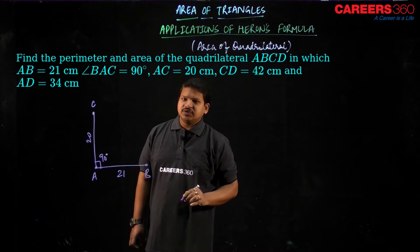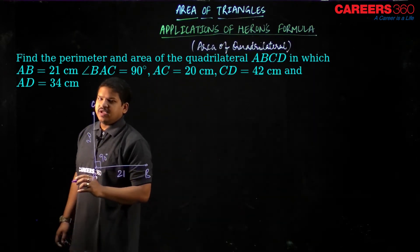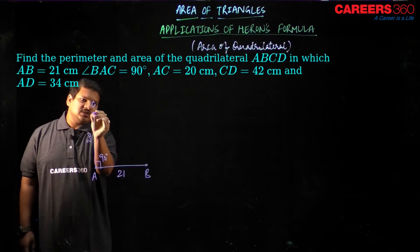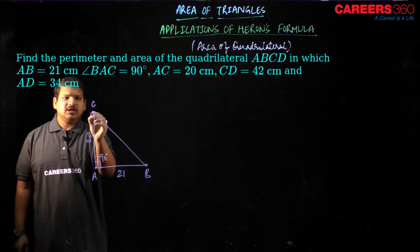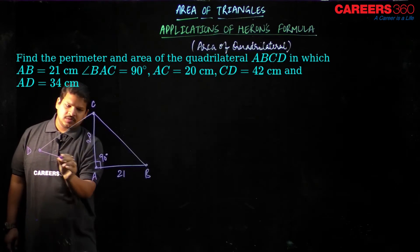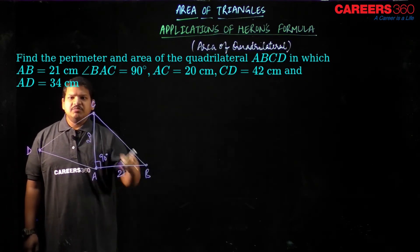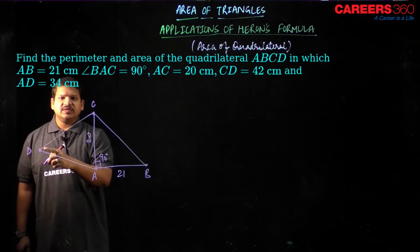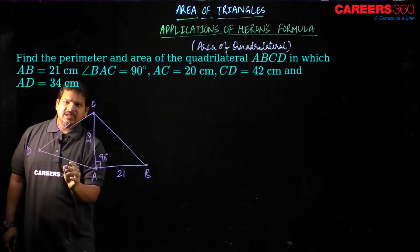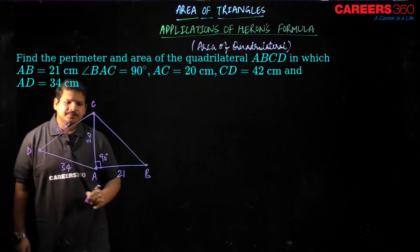Then we have CD as 42 centimeter. We have to find out a quadrilateral A, B, C. This will be there and there is another point will be D that will be joined to A. A, B, C, D we have CD as 42 centimeter and AD as 34 centimeter right.